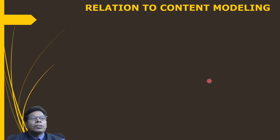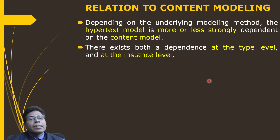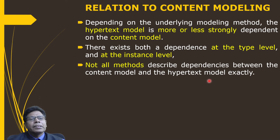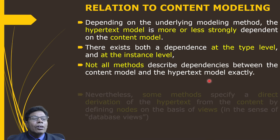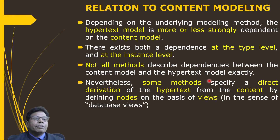Regarding the relation to the content model: depending on the underlying modeling method, the hypertext model is more or less strongly dependent on the content model. There exists dependence at the type level — for example, which classes in the content model form which node in the hypertext model — and at the instance level, which sets of objects in the content model populate that node. Some methods specify a direct derivation of the hypertext from the content by defining nodes on the basis of database views.